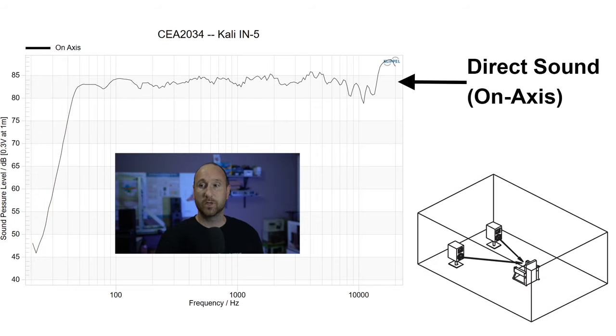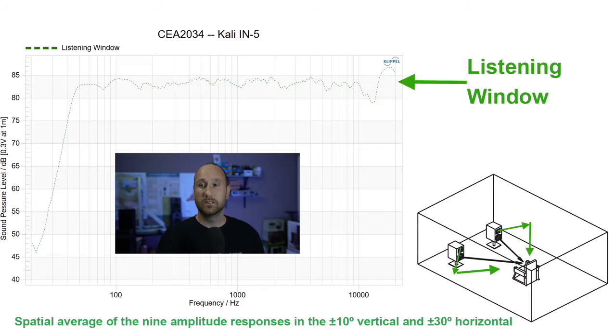On the surface all of this seems pretty straightforward. You understand how the measurements are taken — on-axis and off-axis — and depending on what you're trying to define, you use a portion of those measurements. For example, if you want to define just the direct sound, that's the zero-degree on-axis response. The listening window is the plus-or-minus 10 degrees vertical and plus-or-minus 30 degrees horizontal response. This is pretty straightforward to put on a graph once you have the data.